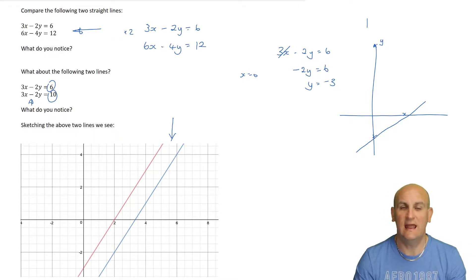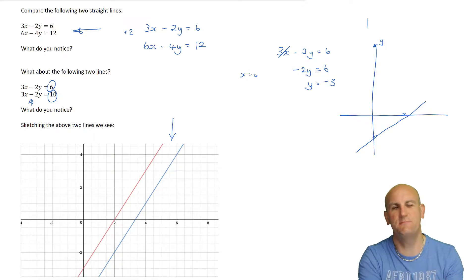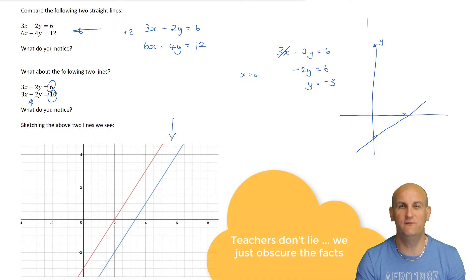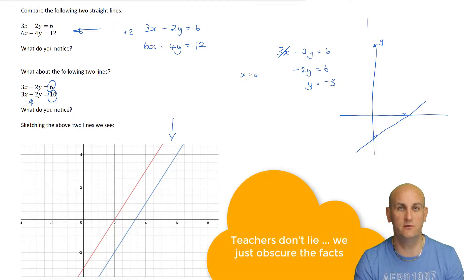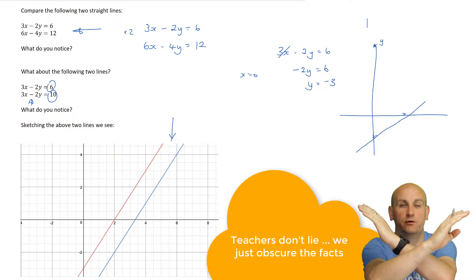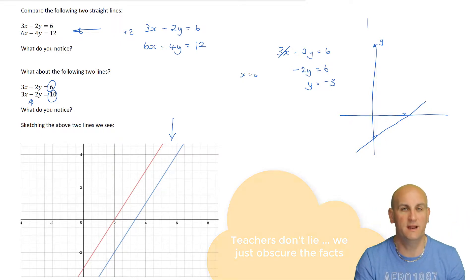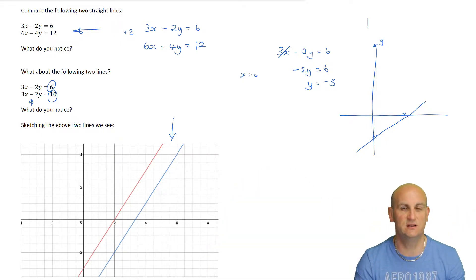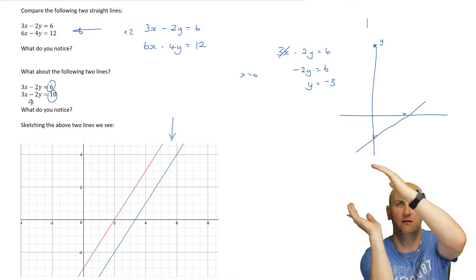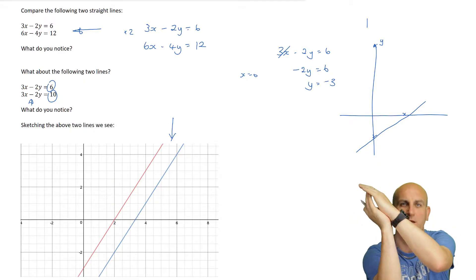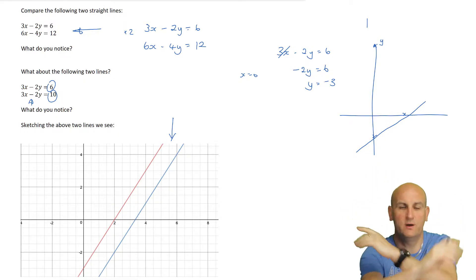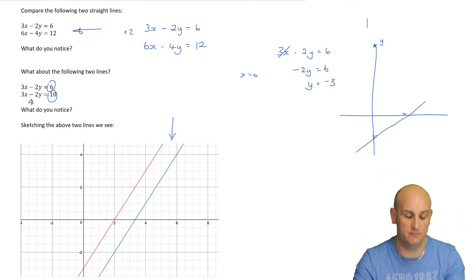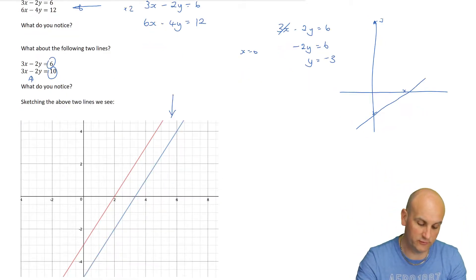So we sort of lied to you - we constrained things back in years 9 and 10 to only give you part of the story. We always made sure that those lines would cross, but actually there are three cases for straight lines: they are either parallel, they're the same, or they cross once. That's going to be very important to the Methods 1 and 2 course.